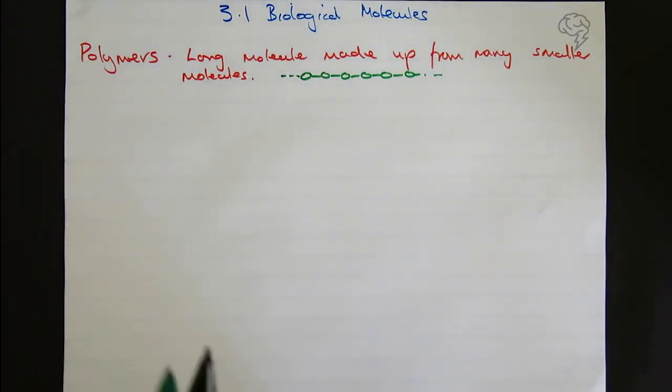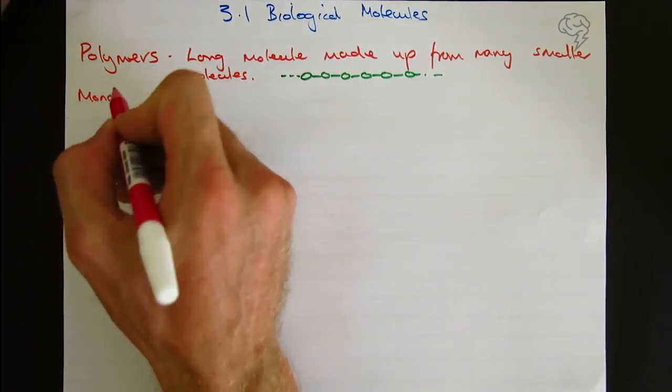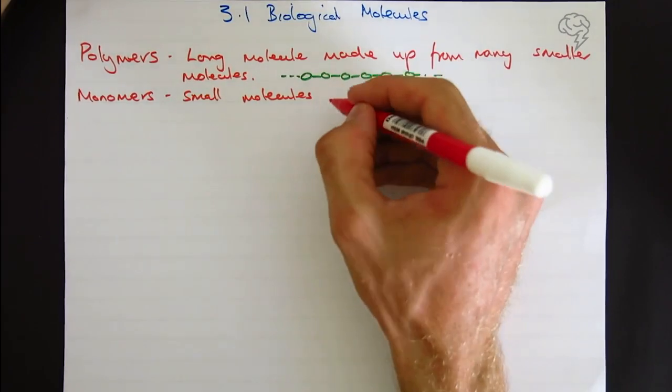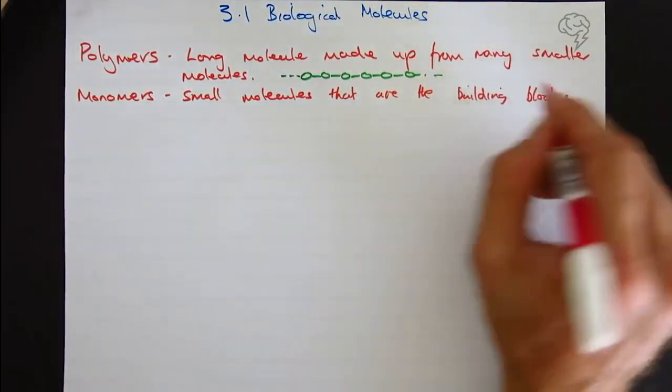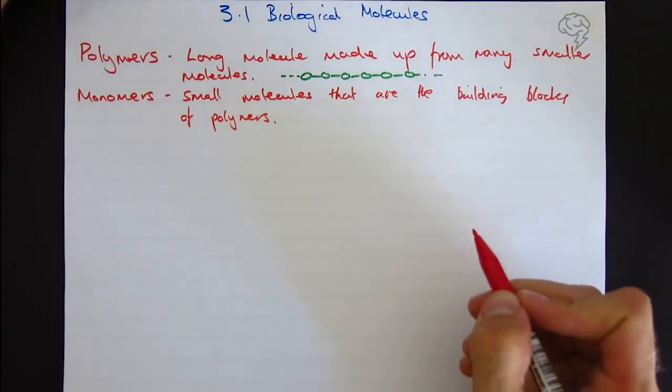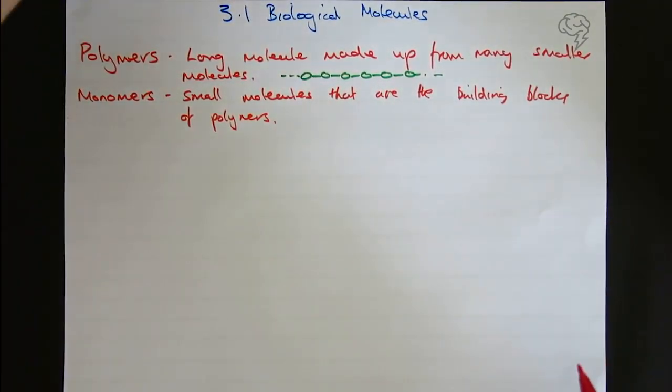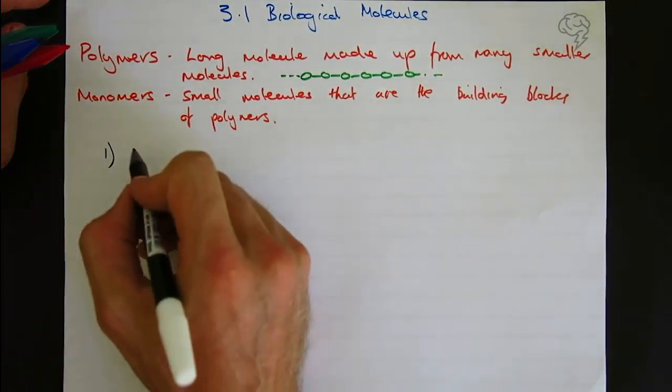What are polymers made of? They're made of monomers, as in monocle. Mono meaning one. These are small molecules that are the building blocks of polymers. Let's put some examples down. They are going to be categorized for each of the different biological molecules.